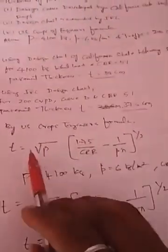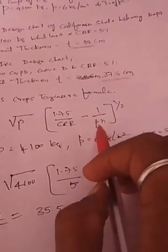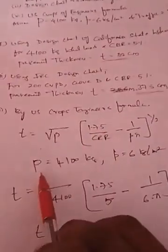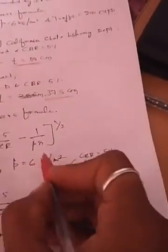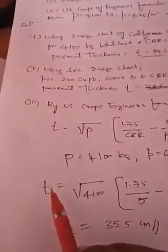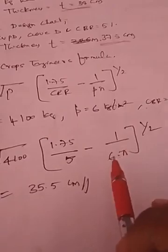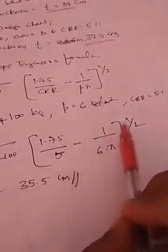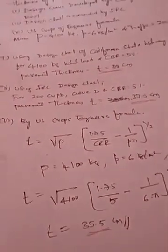Third method — using the US Corps Engineers formula. T = √[(1.75P / CBR) − (1 / (p × π))]^(1/2). Substituting the values: capital P = 4100 kg, small p = 6 kg/cm², CBR = 5%. Therefore T = √[(1.75 × 4100 / 5) − (1 / (6 × π))]^(1/2), which gives T = 35.5 cm. So the thickness of the pavement using the US Corps Engineers formula is 35.5 cm.